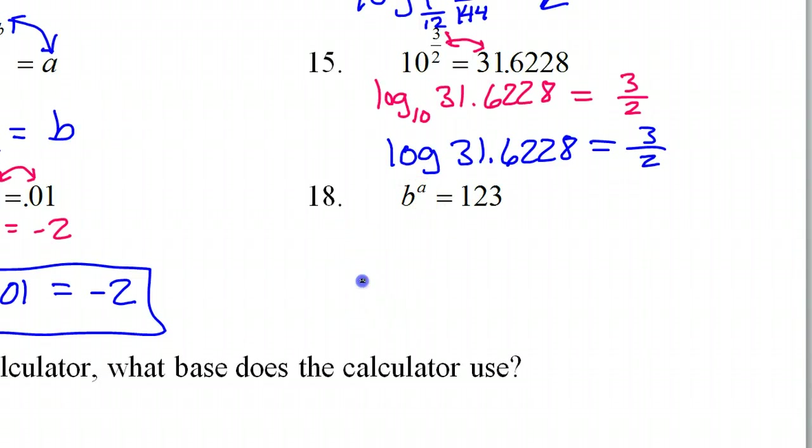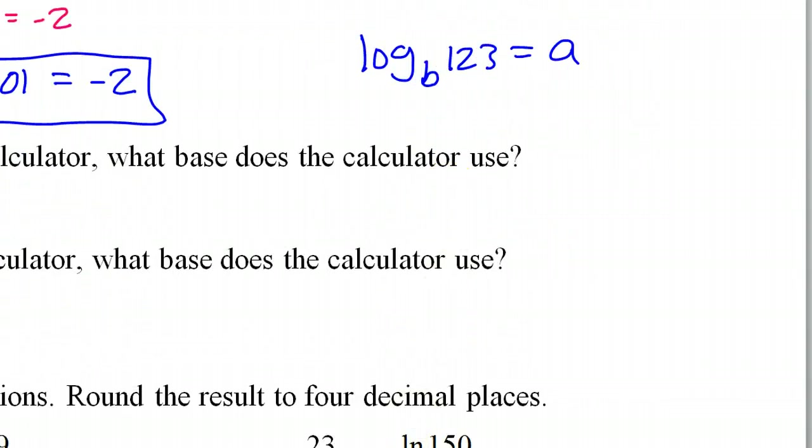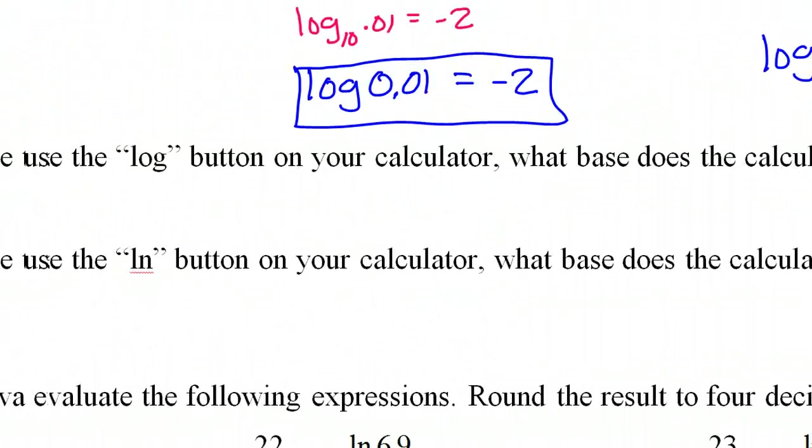Number 18. Start with the base. So it's going to be log base B. Switch these. So 123 is equal to A. So that's it for those guys.